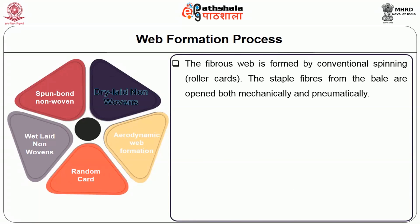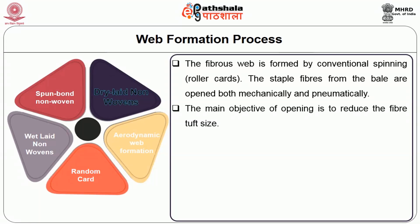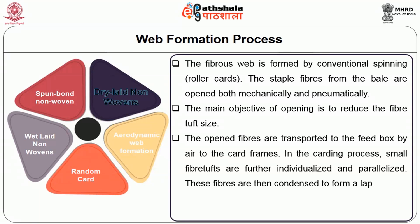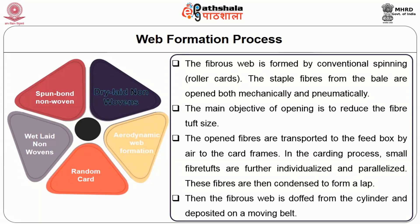The dry-laid nonwovens: in this method, the fibers of the web are formed by conventional roller cards. The staple fibers from the bales are opened by mechanical or pneumatical means. The main objective of opening is to reduce the fiber tuft size. Further, blending of fiber tufts from different bales also takes place in this process of opening and mixing. Then the open fibers are transported to the feed box by air to the card frame. In the carding process, small fiber tufts are further individualized and parallelized. The carding action holds and combs the fibers causing fiber separation. These fibers are then condensed to form a lap or batting. Then the fibrous web is stripped from the cylinder and deposited on the moving belt.